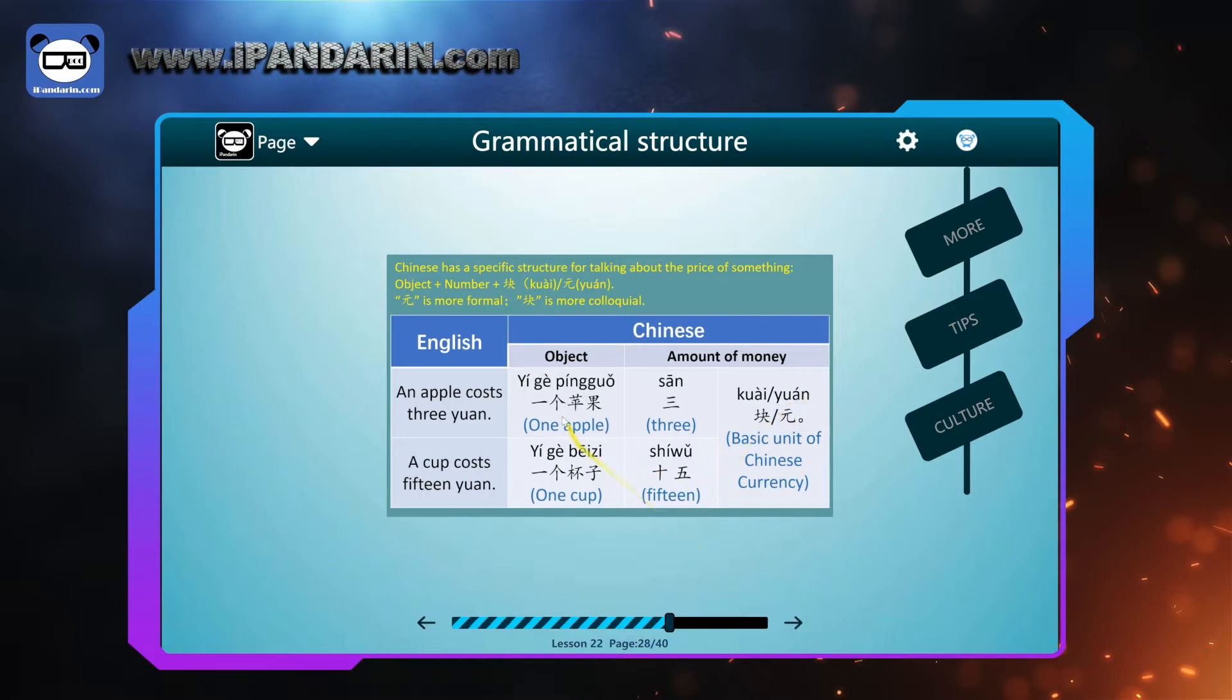While if 一个苹果三块. What about three apples? 三个苹果多少钱? 三个苹果九块钱. I got five cups. 五个杯子多少钱? 五个杯子七十五块钱.